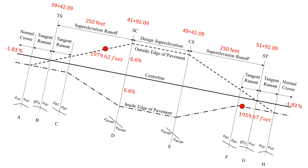To fully orient this: if we rotated this diagram to account for the actual centerline slope of negative 1.83%, everything rotates accordingly. The relative elevation difference between the centerline and the inside or outside edge of pavement stays the same, but the centerline elevation changes, and we still move relative from it to find our edge of pavement elevations.